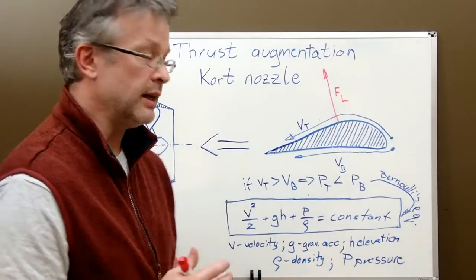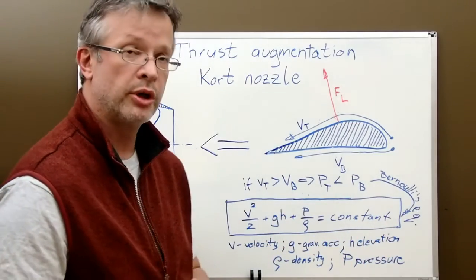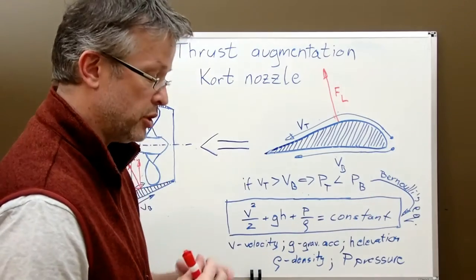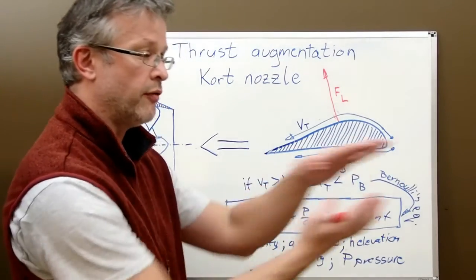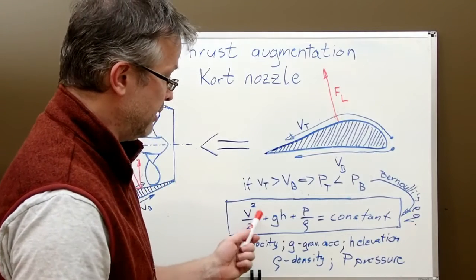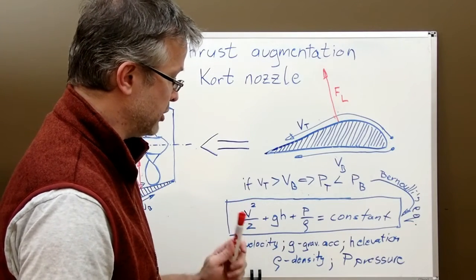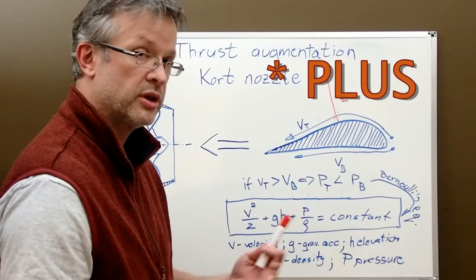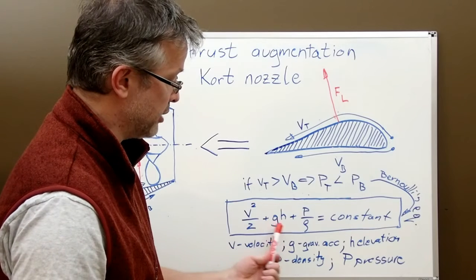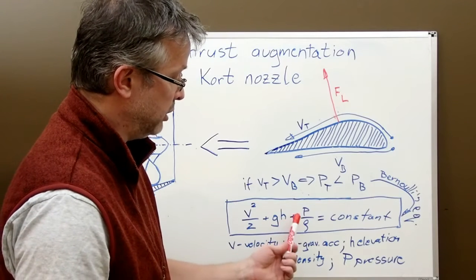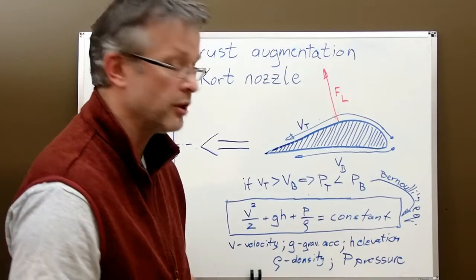In order to understand it, we have to jump into something which is called Bernoulli's equation, which tells us that in any stream of fluid, if we take the velocity squared divided by two times G, which is gravity acceleration times elevation, this is hydrostatic component, plus static pressure divided by density, it needs to be constant.